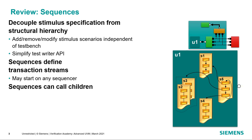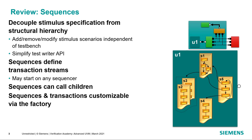We may have a sequence that calls S1, which might be some initialization. Then S2 and S3 can run in parallel, and that might be the main part of our test. And then S4 can be a cleanup sequence. It's important to remember that sequences and the transactions are extensions of UVM object and are all created from the factory, so they're all customizable from the test. So if you want to have a test override a particular sequence to generate error transactions instead of basic transactions, you have that flexibility.